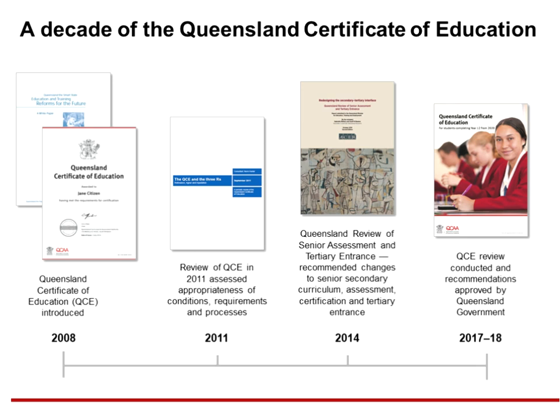The Queensland Certificate of Education has been our State's senior schooling qualification for over 10 years. It was first introduced as an outcome of the Queensland Government's White Paper, Queensland the Smart State, Education and Training Reforms for the Future. Its introduction aimed to increase participation and achievement while increasing completion rates for Year 12 or an equivalent. Since this time, there was a review in 2011 which assessed the appropriateness of the conditions, requirements and processes surrounding the QCE. As a result of the ACER report, Queensland Review of Senior Assessment and Tertiary Entrance recommended changes to Senior Secondary Curriculum, Assessment, Certification and Tertiary Entrance.